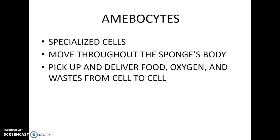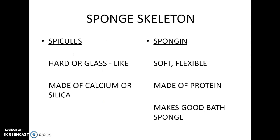There are also specialized cells called amoebocytes. They pick up and deliver materials through the body — they carry good things in and carry the waste out. They're much like the mailman of the sponge. The sponge's body is supported by a skeleton of spicules or spongin. The spicules are hard and made of calcium or silica, and the spongin is soft and made of protein.